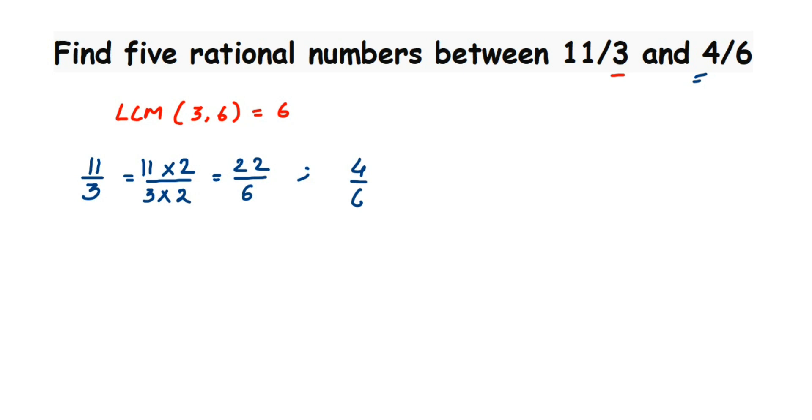Once the step is over, second is find the gap between the numerators. Now here we got 6 and 6, so that step is over. Now check the difference, that is the gap between 4 and 22. You can see the lot of gap, right? And here we want only 5 rational numbers.